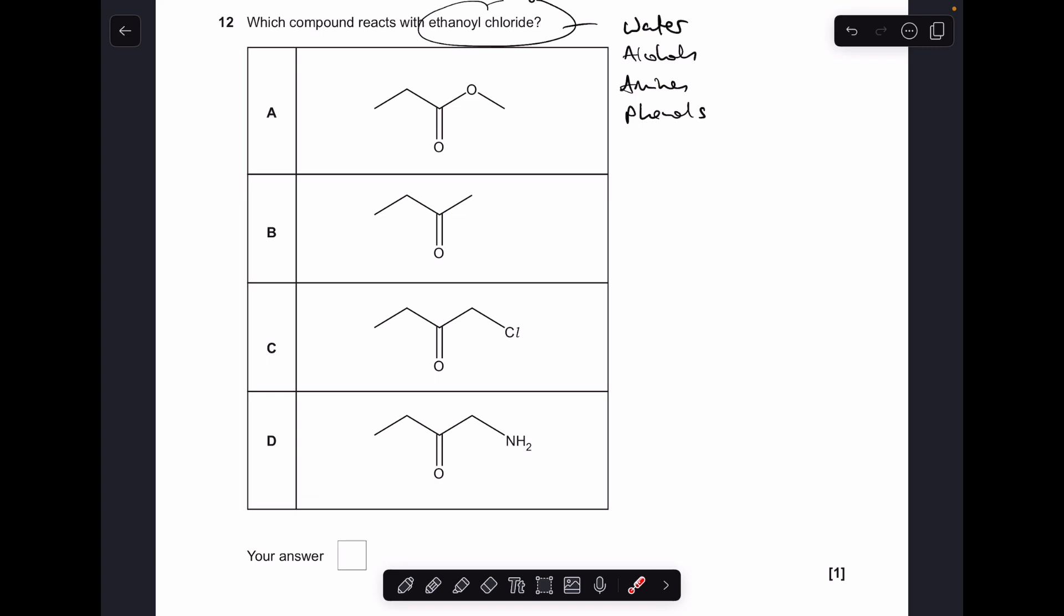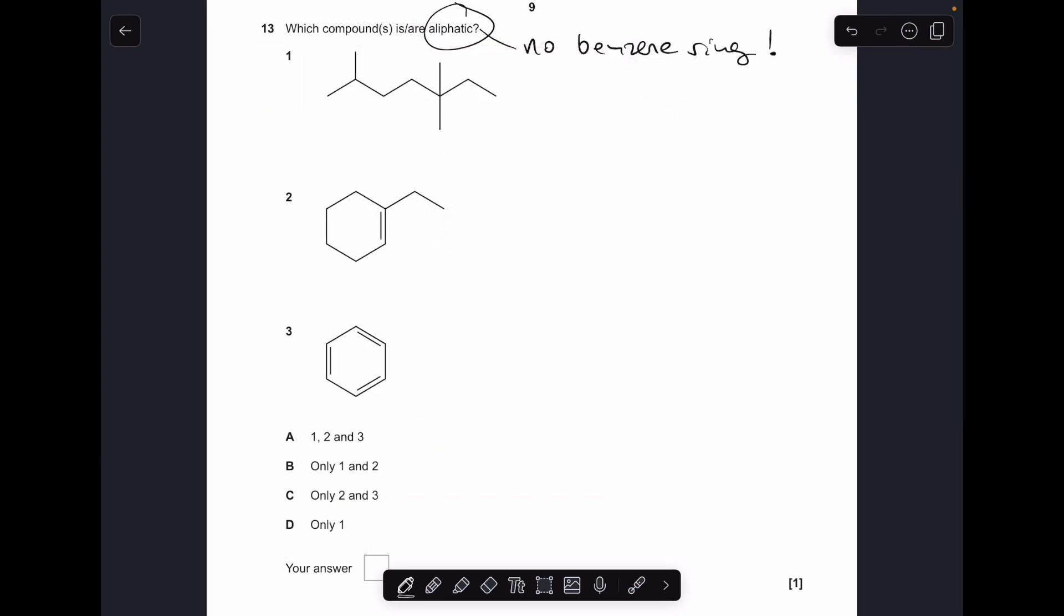Moving on to twelve. Acyl chlorides, so example ethanoyl chloride, react with things like water, alcohols, amines, and phenols. So which one of those is likely to react with ethanoyl chloride? It is D because that is an amine. Moving on, number thirteen. Aliphatic compounds don't have benzene rings in them, so one doesn't have a benzene ring, two doesn't have a benzene ring, three is a benzene ring, so one and two only, B.